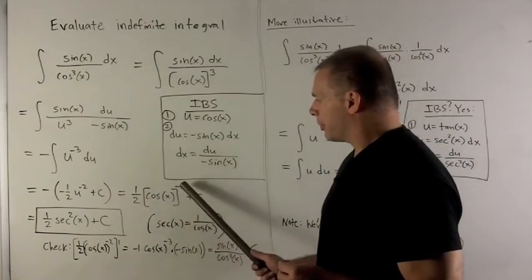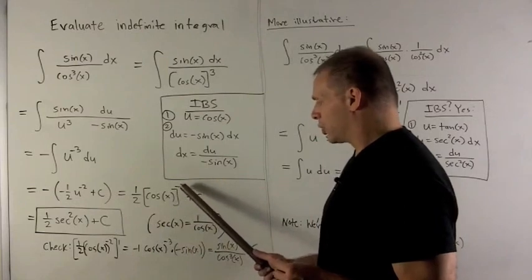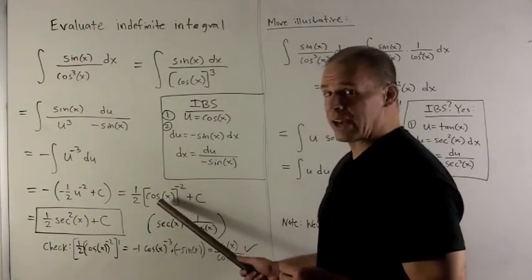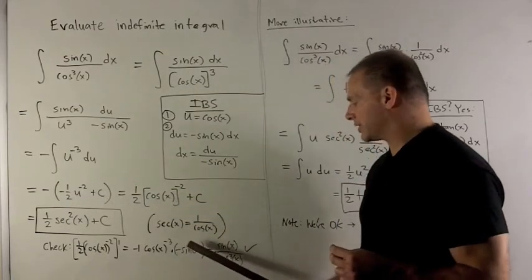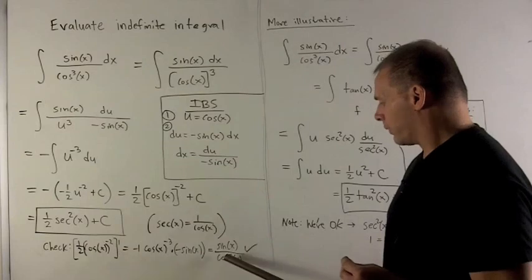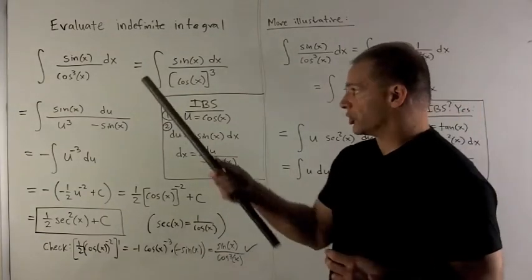For a check, I bring the minus 2 down, gives me a minus 1. We subtract 1 off the exponent, gives me minus 3. Derivative of the inside, using the chain rule, is minus sine of x. Collecting everything gives me sine of x over cosine cubed x. And that agrees with the original integrand.